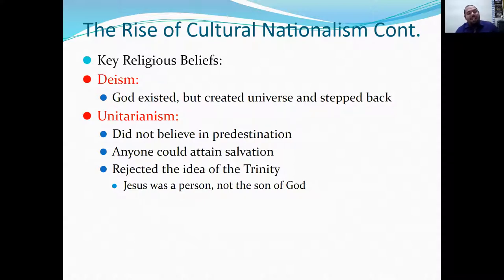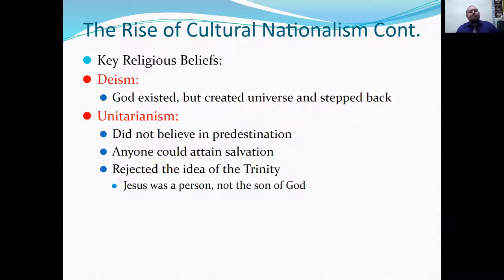Now we're going to move on to religion. Two types of religious movements pop up during this time. Deism held that God created the universe but then stepped back and let it run naturally. And then you have Unitarianism, where Unitarians did not believe in predestination — the idea that when you're born, you're already destined for heaven or hell no matter what you do.